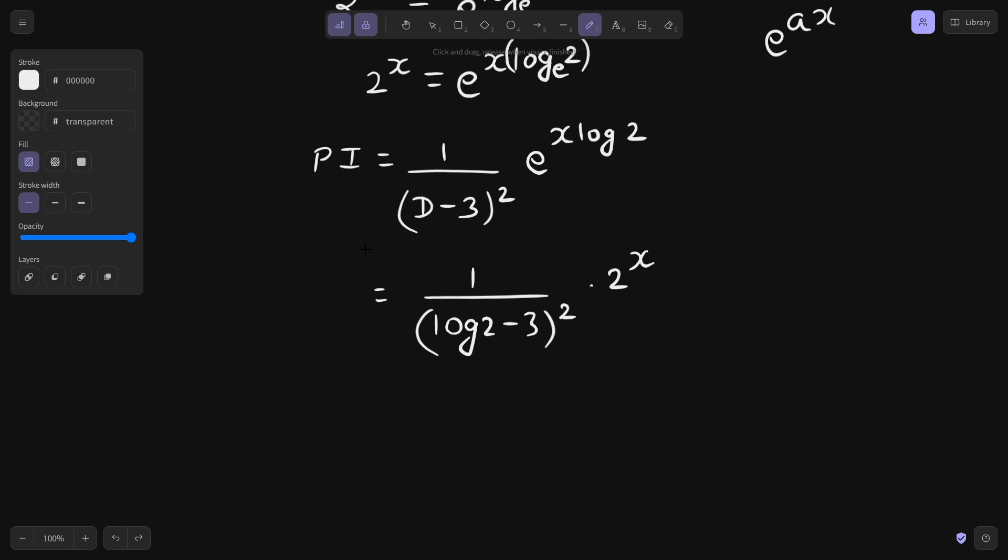If you wish you can find log 2 value from calculator. You can find log 2 minus 3 whole square value from calculator and put that here. That is completely your choice. The simplified version of PI is 2 power x divided by log 2 minus 3 whole square.